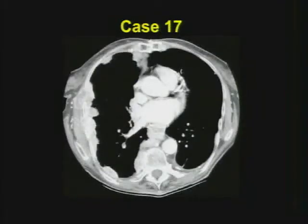Case seventeen should be fairly straightforward. Multiple masses along the chest wall. Are there things that can suggest what may have contributed to the development of this malignancy? What are the risk factors that people have that might — occupationally or otherwise — have predisposed them to developing this particular cancer?